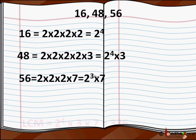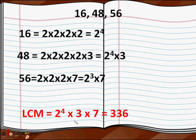Now let us find LCM. For LCM we take the greatest power of every prime factor. So 2^4 × 3 × 7, so LCM would be 336.